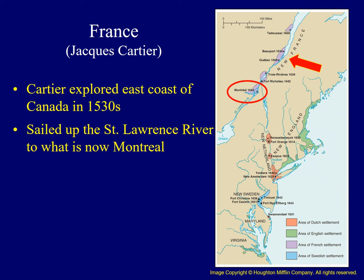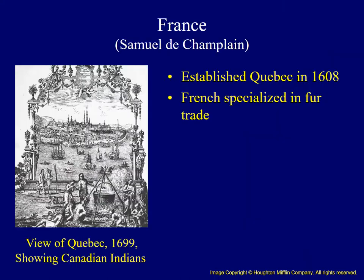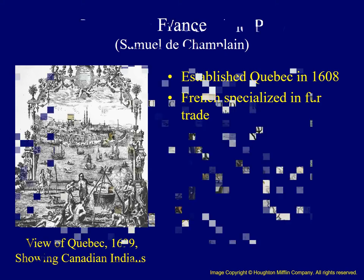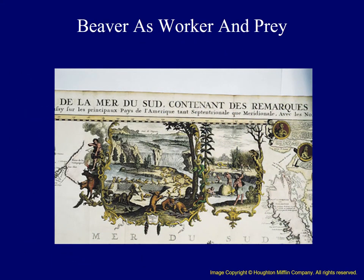Cartier was followed by another important Frenchman, Samuel de Champlain. Champlain founded the city of Quebec in 1608, which eventually became a key trading post as the French specialized in the fur trade. In the late 16th and 17th centuries, felt hats were a tremendous fad in Europe. The French developed important alliances with Native Americans, particularly the Huron, which helped maintain their access to a steady stream of fur pelts. In return for beaver pelts, the French offered trade goods, which were quickly integrated into the lifestyle of American Indians.